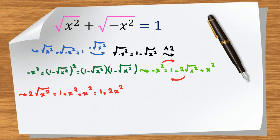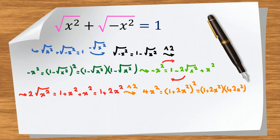We raise both sides to the power of 2 again. The left-hand side becomes 4x squared. The right-hand side is 1 plus 2x squared, all squared, expanded as 1 plus 2x squared times 1 plus 2x squared, which equals 1 plus 4x squared plus 4x to the 4th.